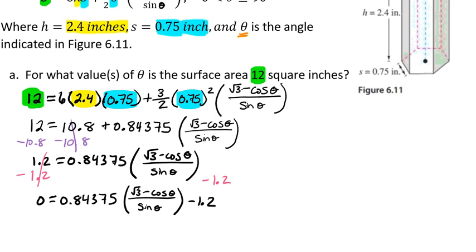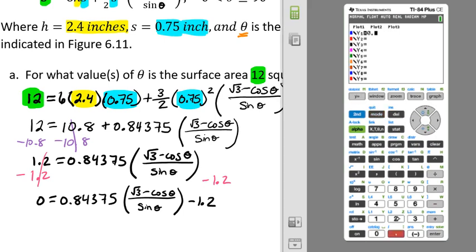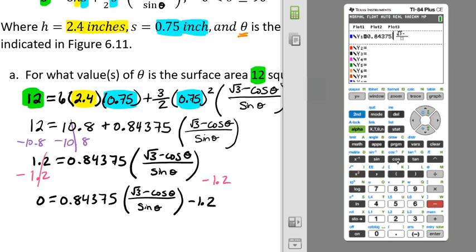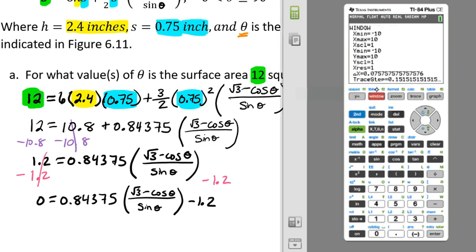So let's pull up our calculator. We're going to go to y equals and enter 0.84375 times a fraction: the square root of 3, then get out of the square root minus the cosine of x, over the sine of x, close parentheses, and then minus 1.2. We need to think about our window — we were told theta is between 0 and 90, so that's our x between 0 and 90. But if we try graphing that and it looks cumbersome, we're probably in the wrong mode — check your mode and make sure we're in degrees.